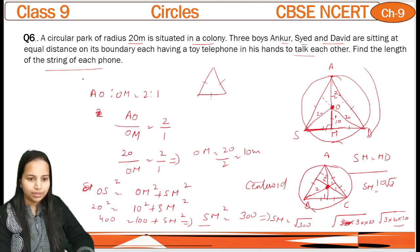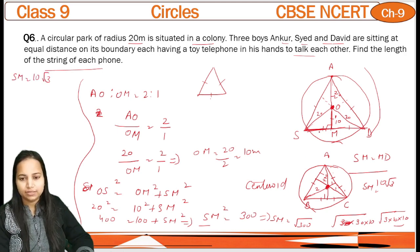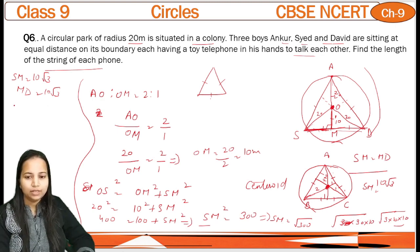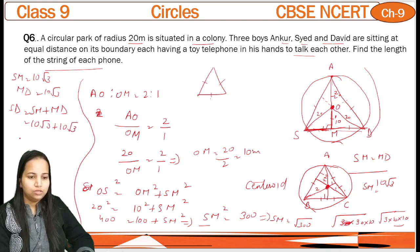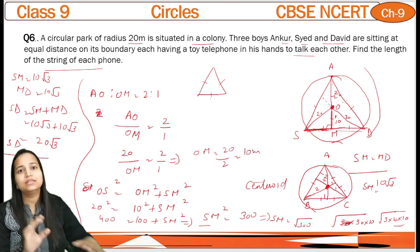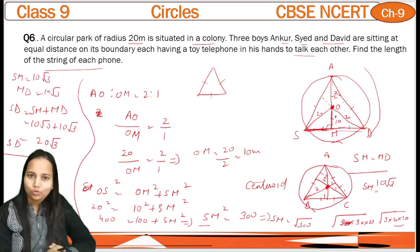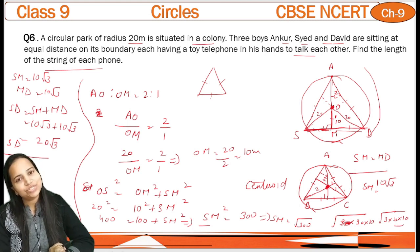So SM is 10√3. SM aur MD equal hain, so MD is also 10√3. SD difference bata kar lein — SD is equal to SM plus MD, so 10√3 + 10√3 = 20√3. So this is the distance — the length of the string of each phone, or the distance between these 3 people. We have done exercise 9.2. Next time karenge next exercise. Keep watching, thank you and bye-bye.